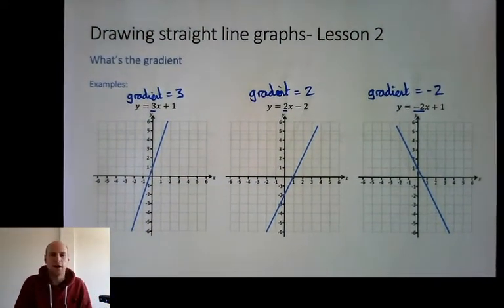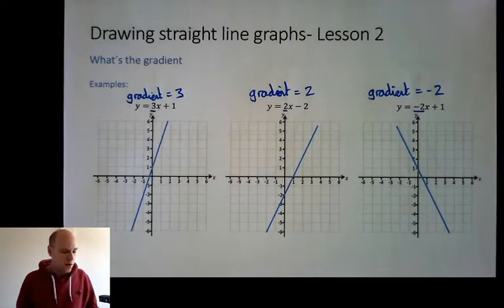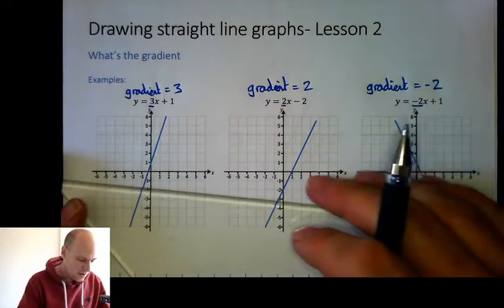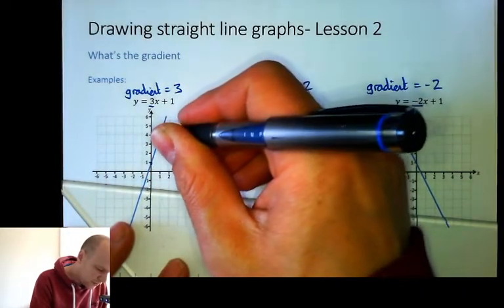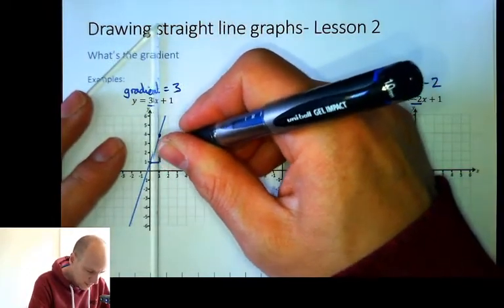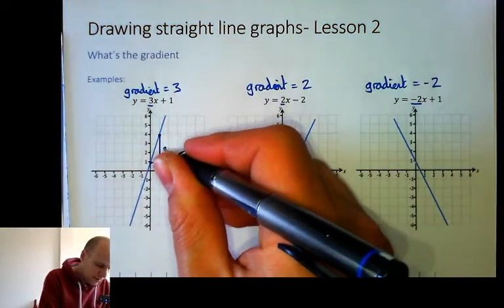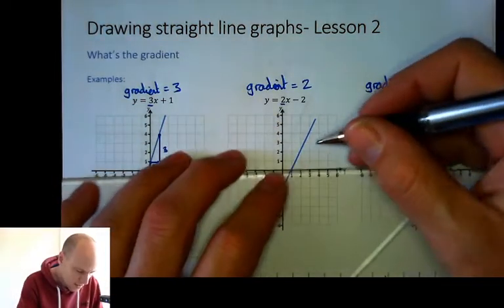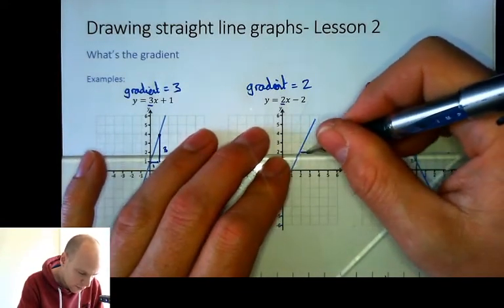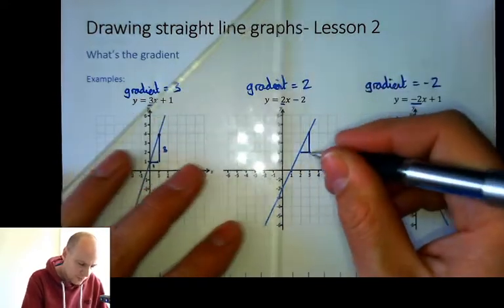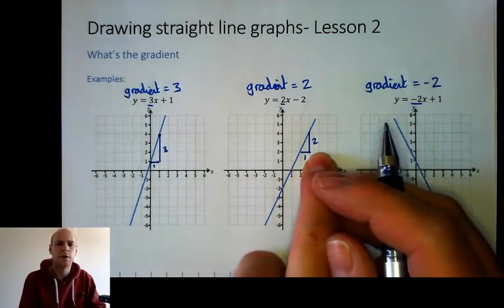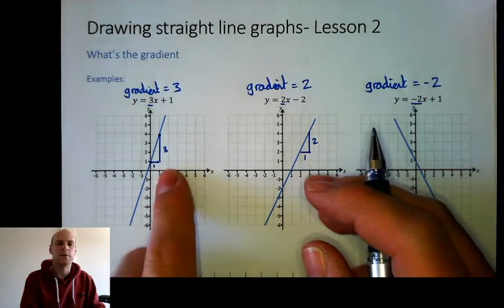So let's have a think about what that means on the actual graph. We've got three different graphs here. Why has that one got a gradient of three and what has that done to the graph? If I just choose a couple of points that the graph obviously goes through and draw a little triangle, you'll see the difference between a gradient of three on that one and a gradient of two on that one. For every one you go across, you go up by three. For this one, for every one you go across, you go up by two. So this one's not as steep.